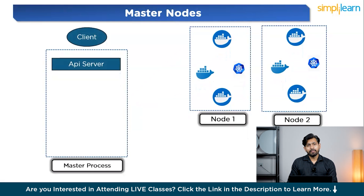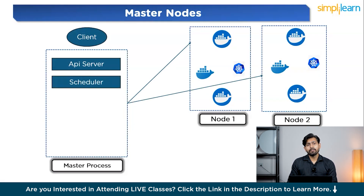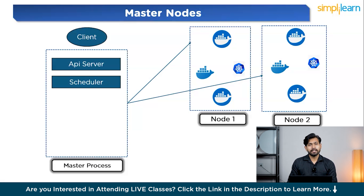The second component is the scheduler. The scheduler is like a smart planner for the cluster. It is responsible for deciding which worker node should run a new application. When you create a new app in Kubernetes, the scheduler looks at all the available worker nodes and determines the best node for the app to run on. Based on available resources like CPU, memory, and network, the scheduler ensures that your apps are distributed efficiently across the cluster so that no single worker node is overloaded.